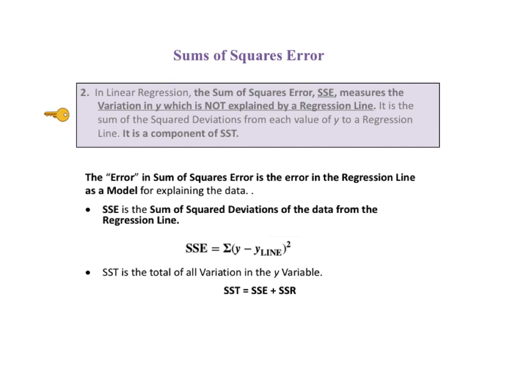The error in sum of squares error is the error in the regression line as a model for explaining the data. SSE is the sum of the squared deviations of the data from the regression line, as shown in this formula. SST is the total of all variation in the Y variable. It is comprised of SSE and SSR, which is the sum of squares regression.